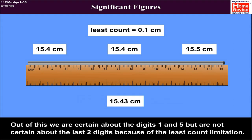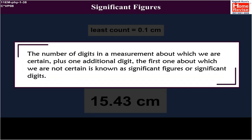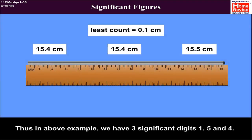Out of this, we are certain about the digits 1 and 5 but are not certain about the last two digits because of the least count limitation. The number of digits in a measurement about which we are certain plus one additional digit, the first one about which we are not certain, is known as significant figures or significant digits. Thus, in above example, we have three significant digits: 1, 5 and 4.